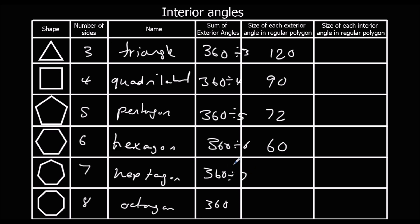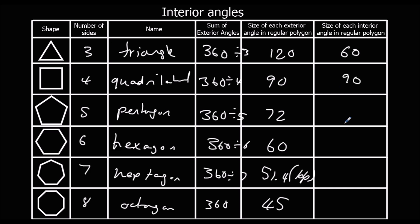Divide by 7 — we need the calculator again — gives 51.4 to 1 decimal place. And divide by 8 is 45. Then to work out the interior angle, it's just 180 take away the exterior angle, because they always add up to 180. So: 60, 90, 108, 120, 128.6 to 1 dp, and 135 — all in degrees.